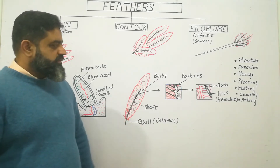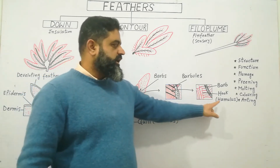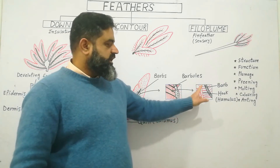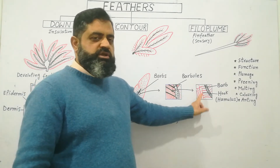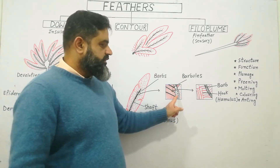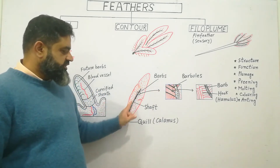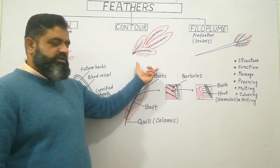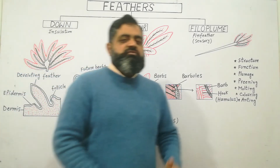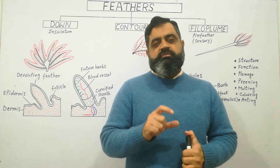So the smallest unit of the feather is the hamulus. Hamuli interlock with each other to form a network-like structure called barbules. Barbules join together to form barbs, and barbs join together to make the shaft, which is at the center. This whole vein-like structure is the feather. The main feather type is the contour feather.